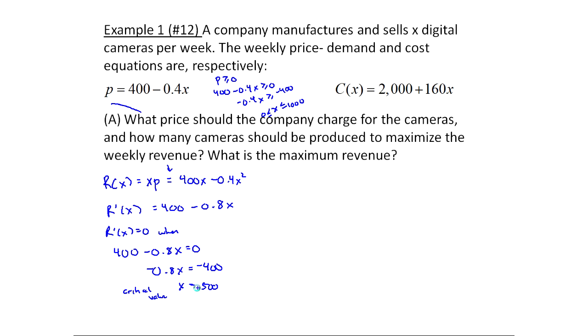Now remember, absolute min or max has to occur at zero, 1000, or 500. However, we also have a special rule called the second derivative test, right? So it says that if you have one critical value in your interval, like we do here, only one critical value, then you can use the sign of f double prime to determine what's going on. So let's take a look in this case, since we're talking about r double prime.